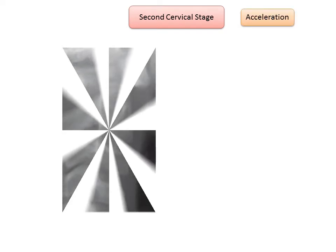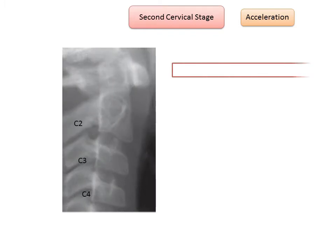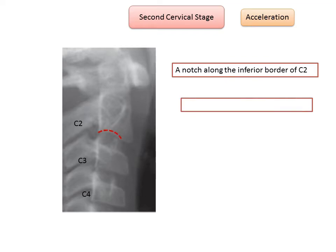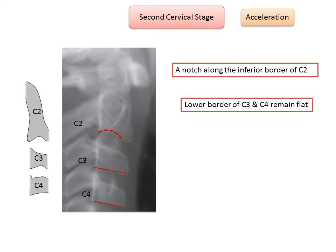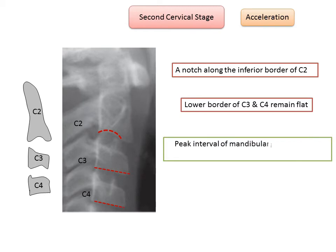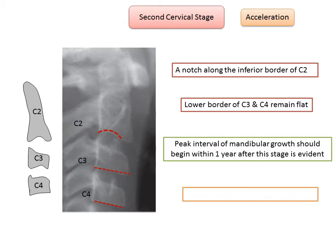The second cervical stage, CS2, is the stage of acceleration. It is characterized by a notch present along the inferior border of the second cervical vertebra — the odontoid process. The lower borders of C3 and C4 vertebral bodies remain flat, and both C3 and C4 retain a trapezoidal shape — again the wedge of cheese appearance. CS2 is considered the 'get ready' stage because the peak interval of mandibular growth should begin within one year after this stage. Sixty-five to eighty-five percent of pubertal growth remains by the end of this stage.